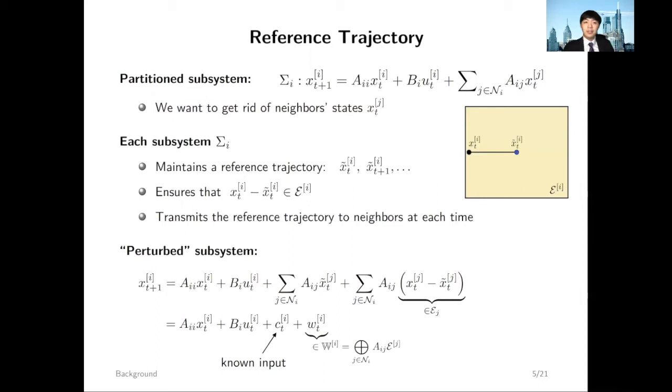At the end of the day, the subsystem dynamics would become a linear system with a norm but time-varying offset term C of T and an artificial disturbance term W of T, which captures the coupling effect from our neighbors.